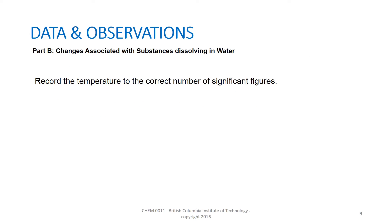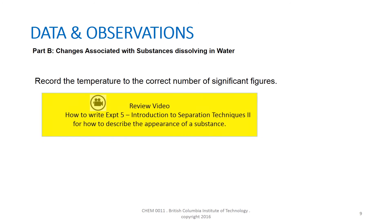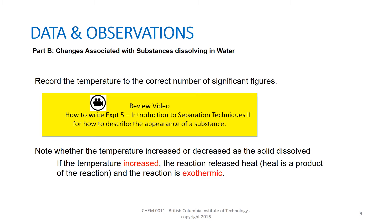In part B of the experiment, the temperature change associated with substances dissolving in water will be observed, and the process will be classified as being either endothermic or exothermic. Remember to record temperatures to the correct number of significant figures. It may be useful to review the video on how to write experiment 5, introduction to separation techniques 2, for how to describe the appearance of a substance.